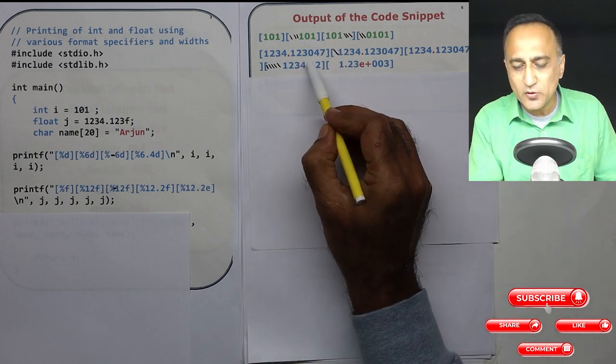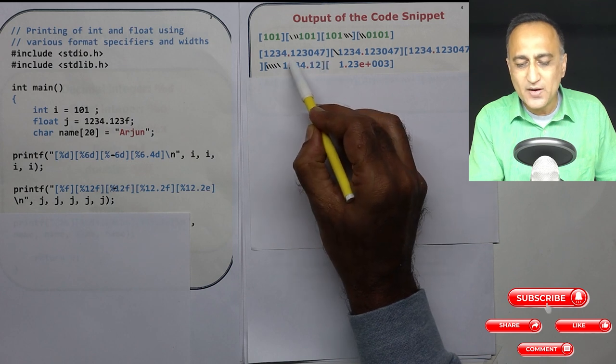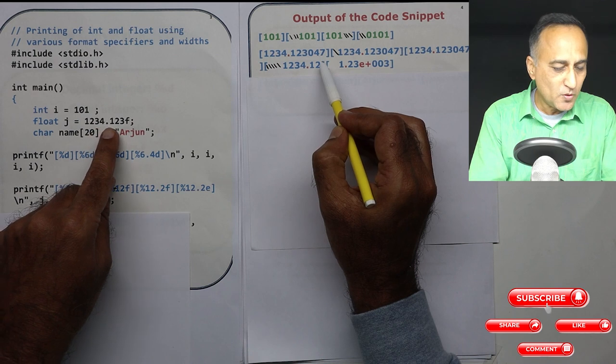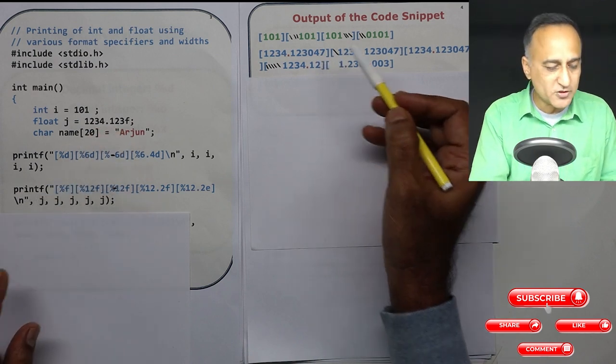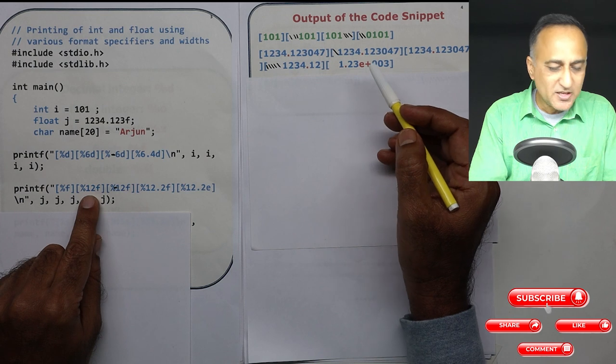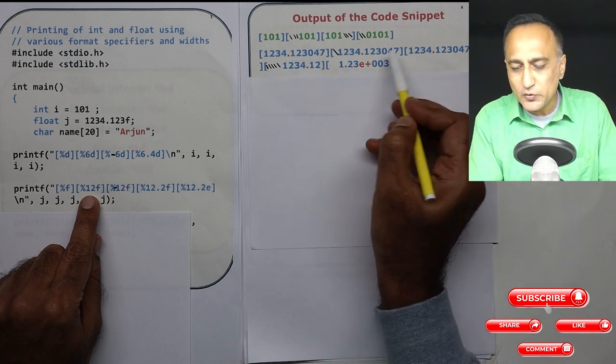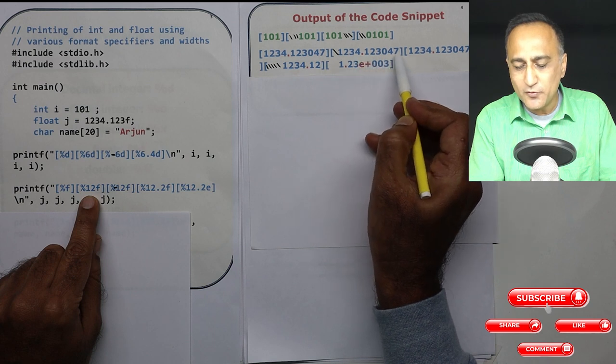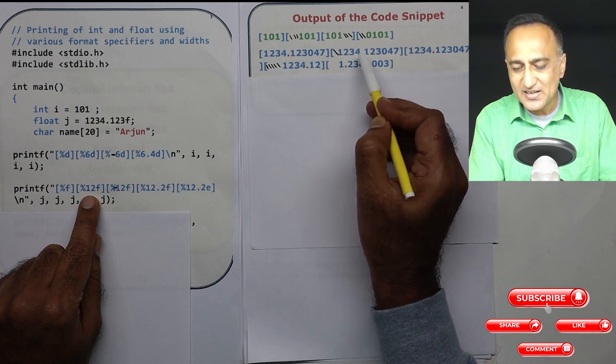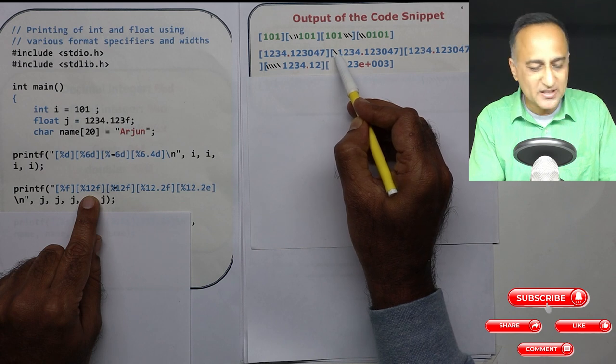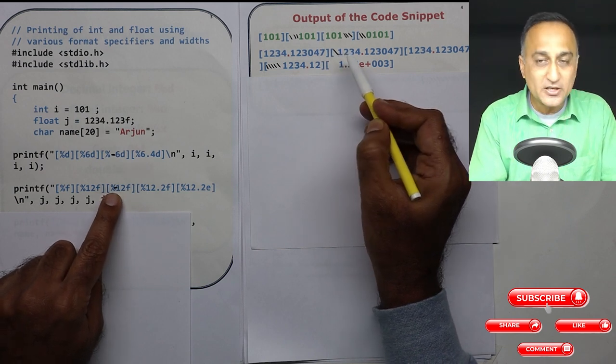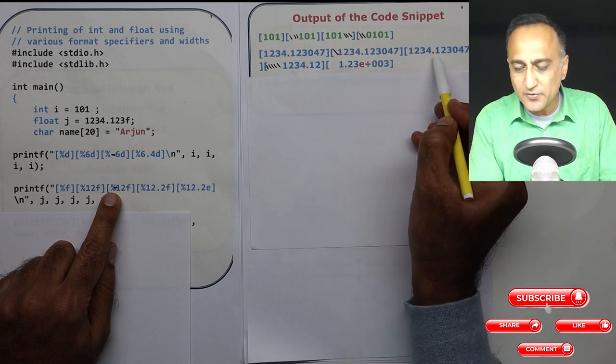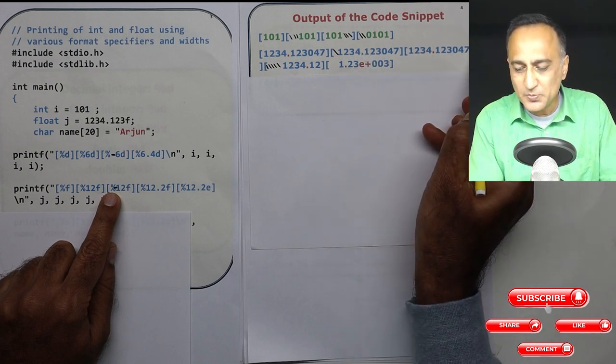So internally it is stored as 123047, that's why after decimal digits it's printing six places accuracy. So 1234.123 was printed as 123047. Now I am saying %12f that means in a width of 12 spaces print 1234.123047, so this is 6, 7, 7 plus 4, 11, so one space at the beginning. Now %-12f, this is a minus, minus 12f. So it's going to print 1234.123047 space at the end.